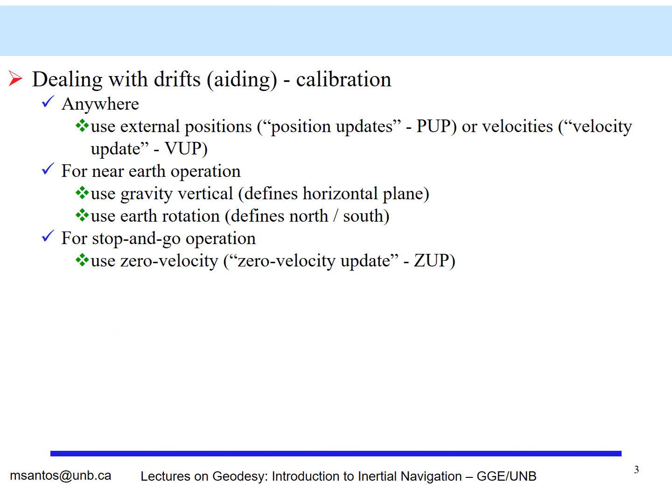Drift is one of the big problems that we have to solve through calibration. A very usual way is by using external information, such as positions and velocities. For example, if we have points of known positions along the trajectory, we can apply the zone positions to the position that is derived from the inertial and correct the drift. Or if we have a different sensor that is given velocity, we can also use that. External position, we can think also if we have a GPS working together, for example.